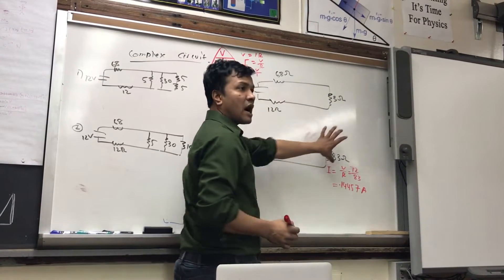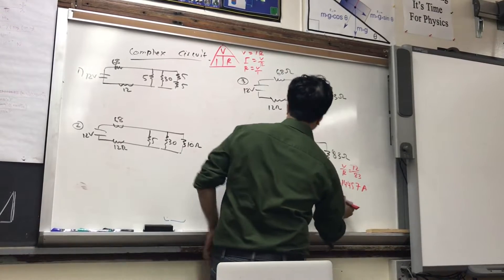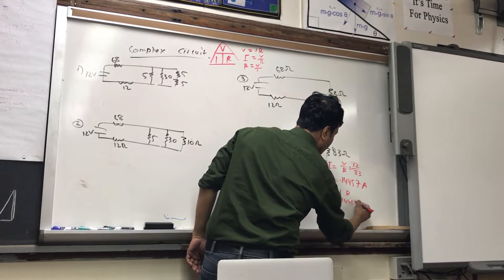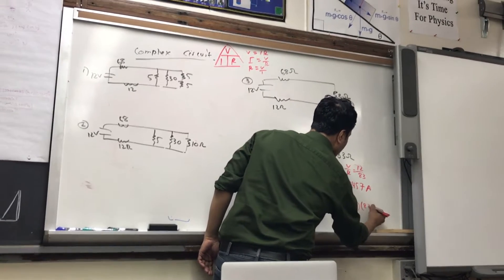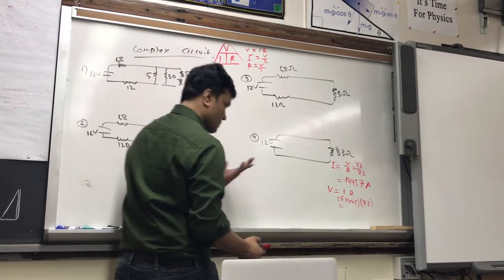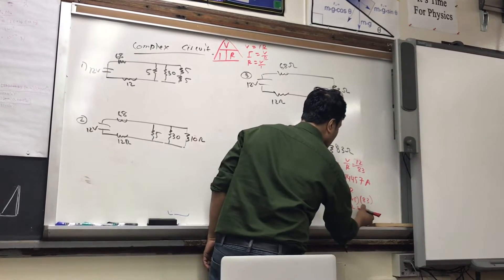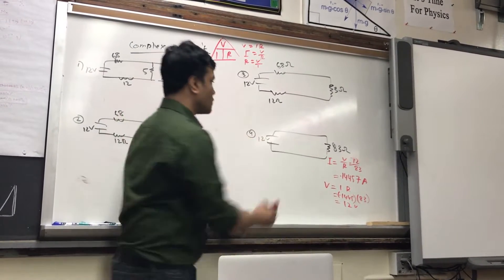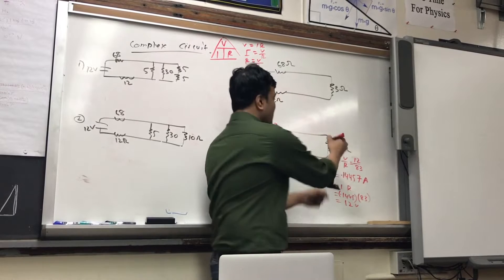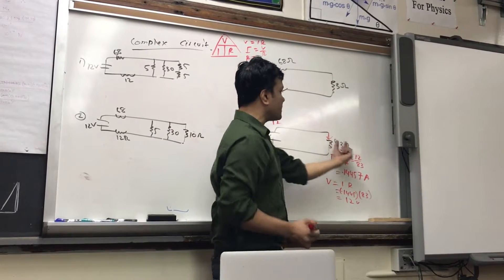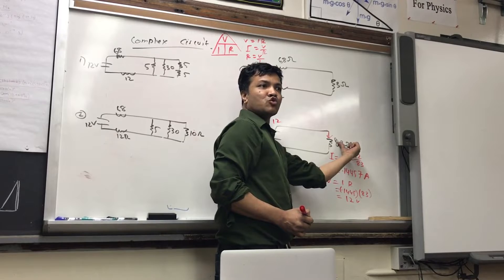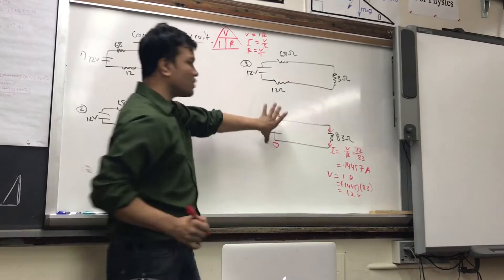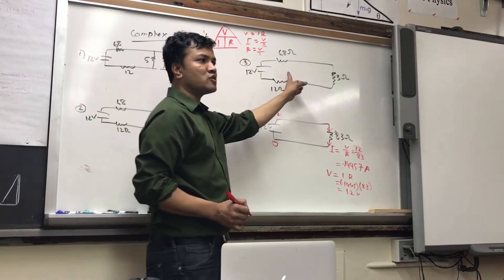So what is the voltage over here? Voltage is — what is the voltage? IR. So I is 0.1445 times R is 83. So that gives us what? 12. Obviously 12. It has to give us 12. If it doesn't give us 12, then that is a problem. Voltage going in: 12. Voltage used up by this bulb: 12. And voltage coming out: 0. Great. So we understand that, right? If we understand this, we can move to this one.